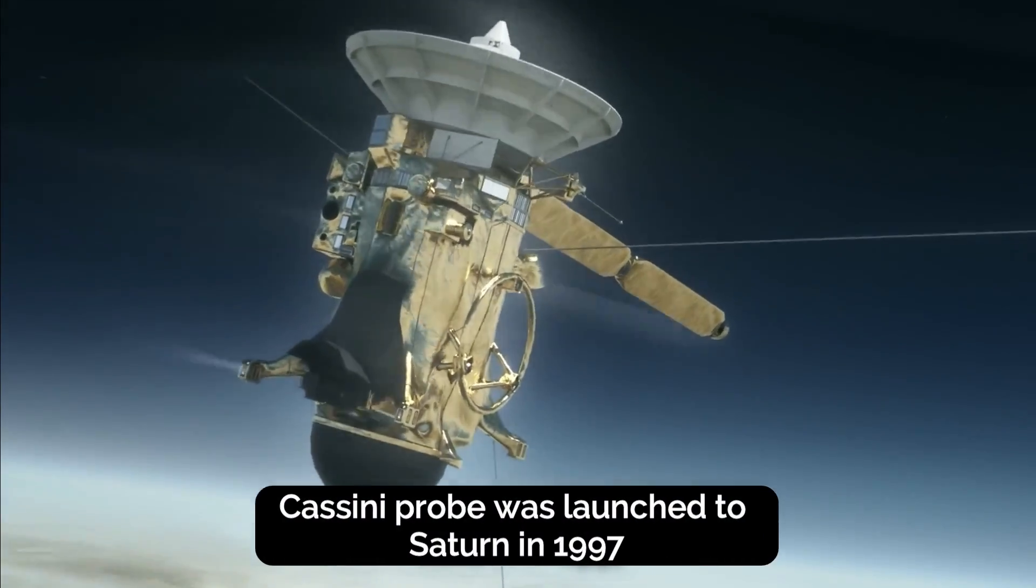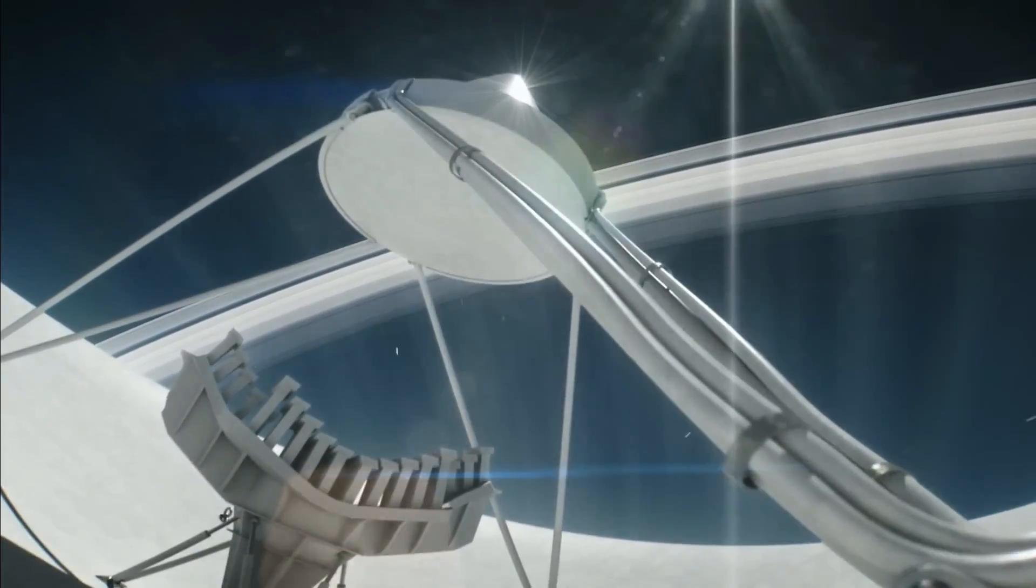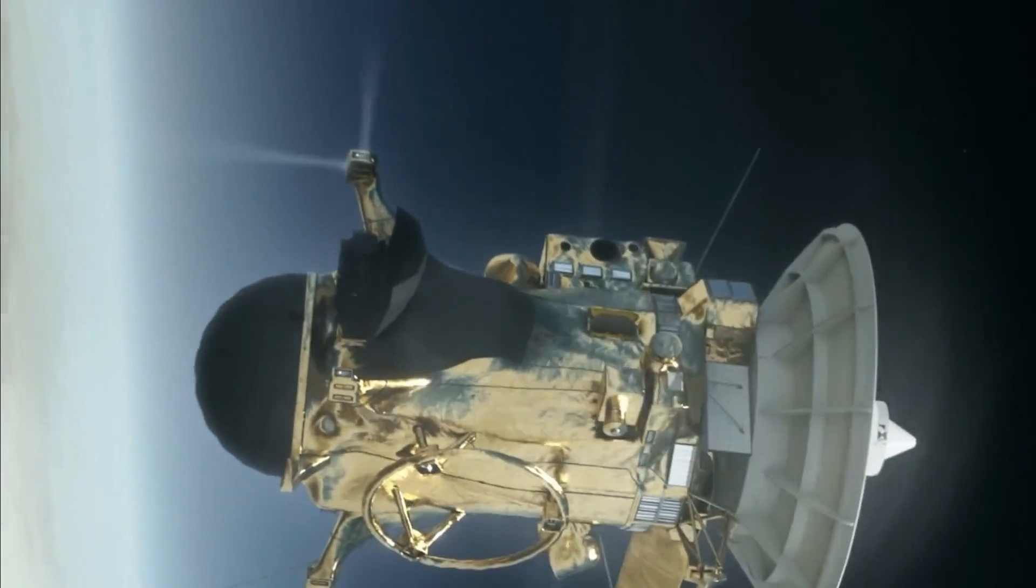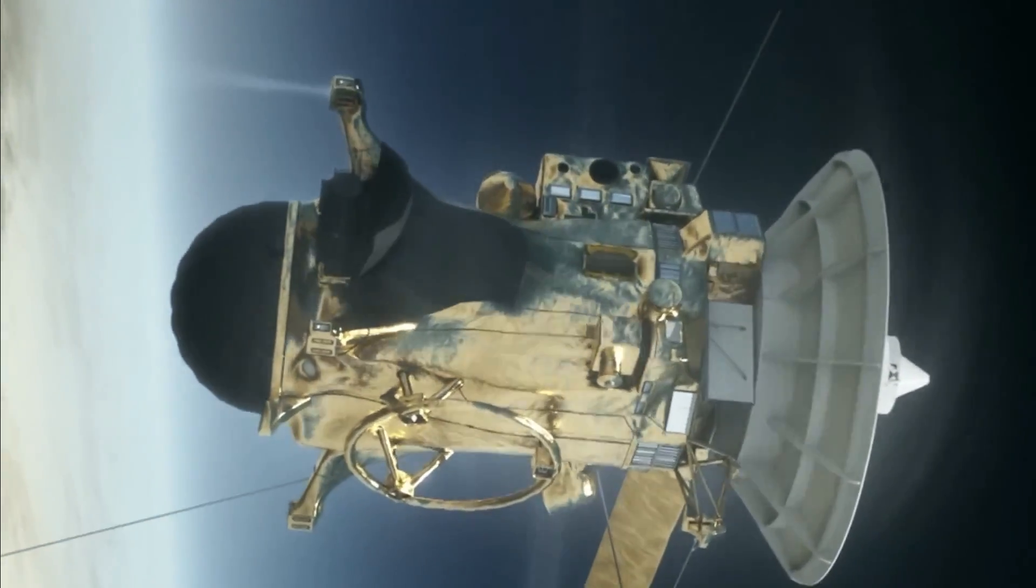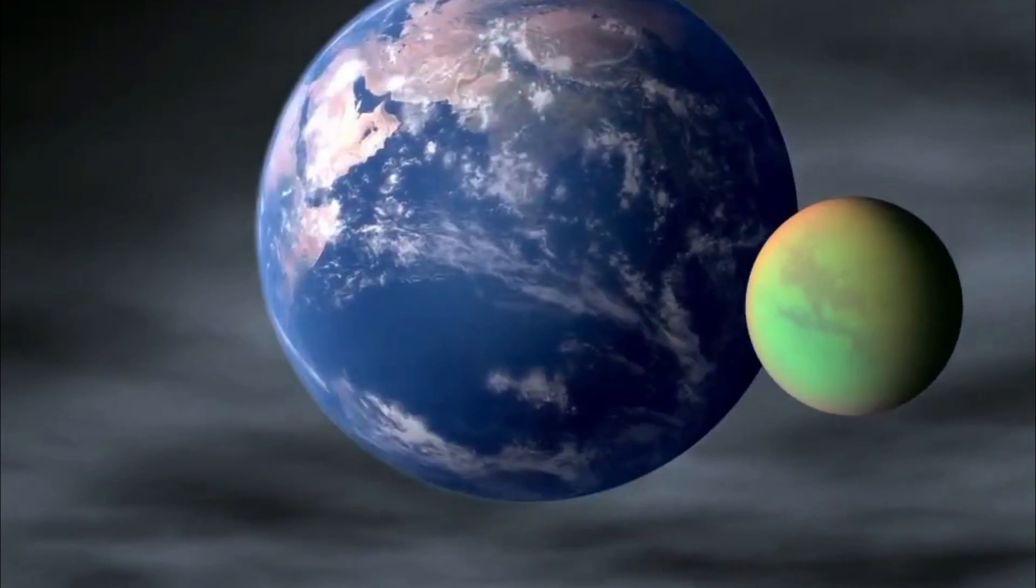The Cassini probe was launched to Saturn in 1997 with the mission of studying the planet and its satellite. Even though Titan wasn't the main focus of this journey, the Cassini probe included a special lander spacecraft, Huygens, that was launched towards Titan in 2004.